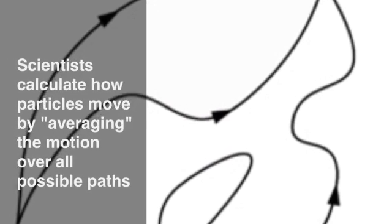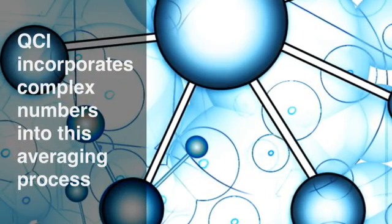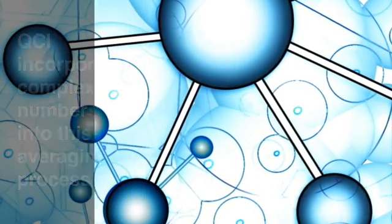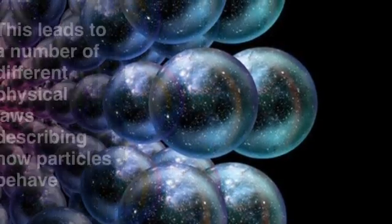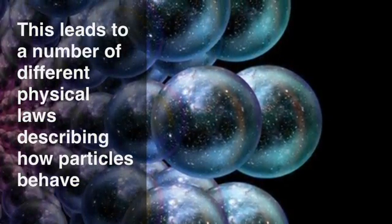Scientists calculate how particles move by averaging the motion over all paths. QCI incorporates complex numbers into this averaging process. This leads to a number of different physical laws describing how particles move.